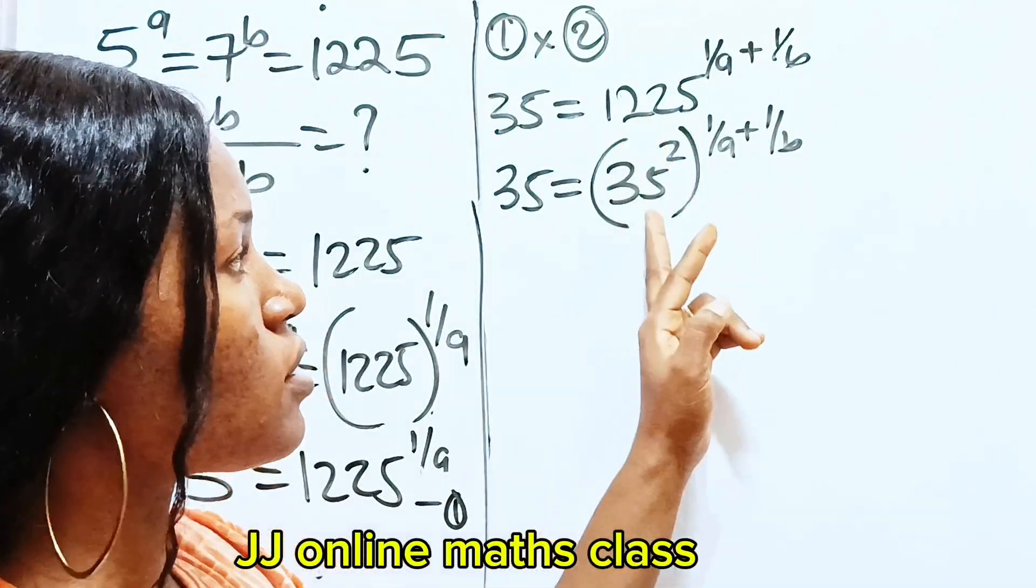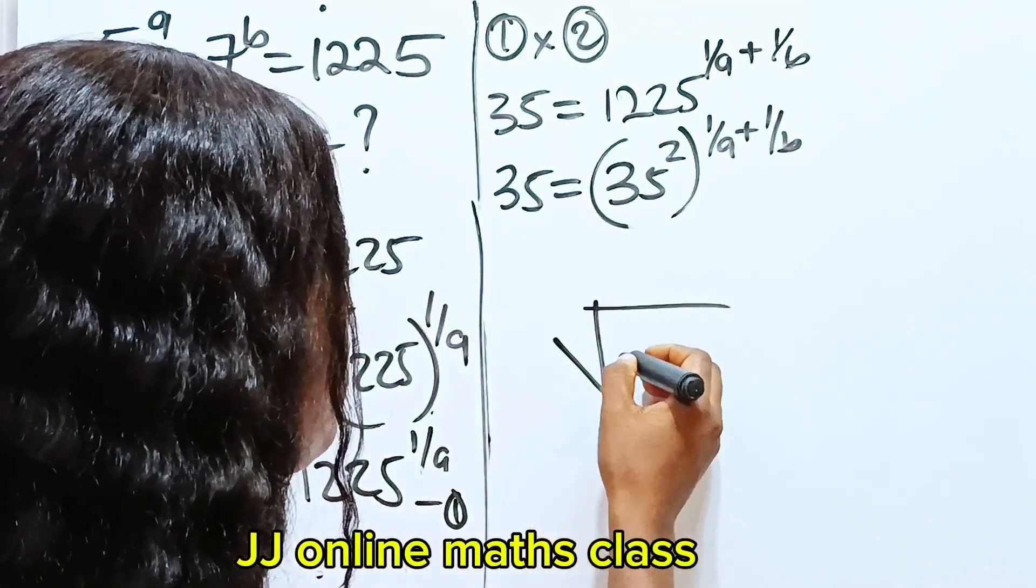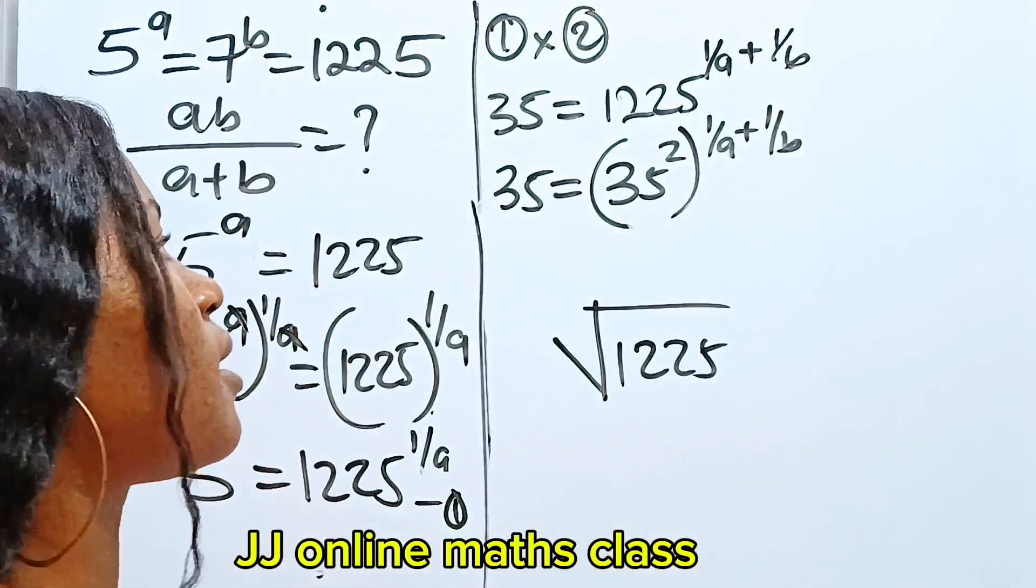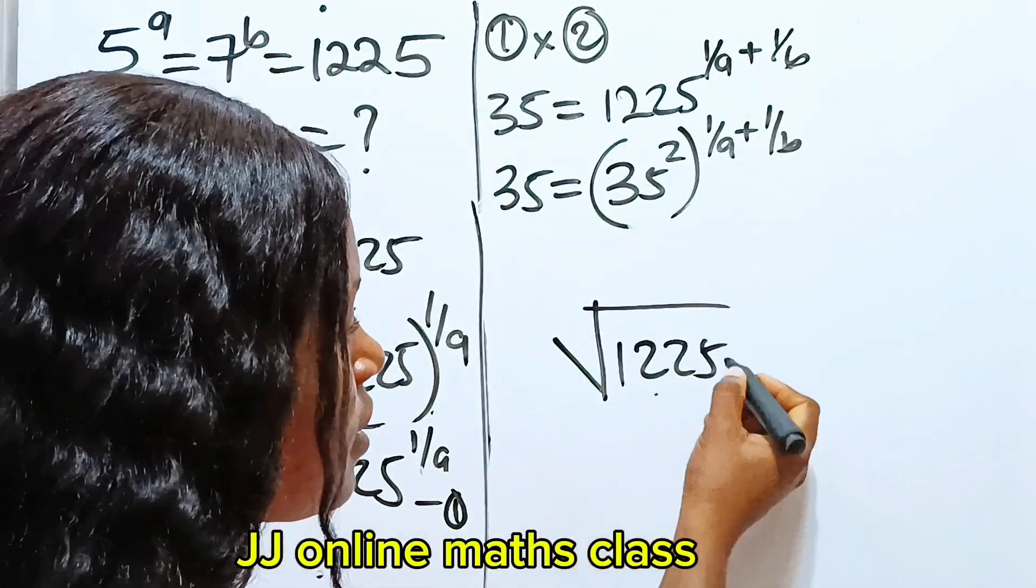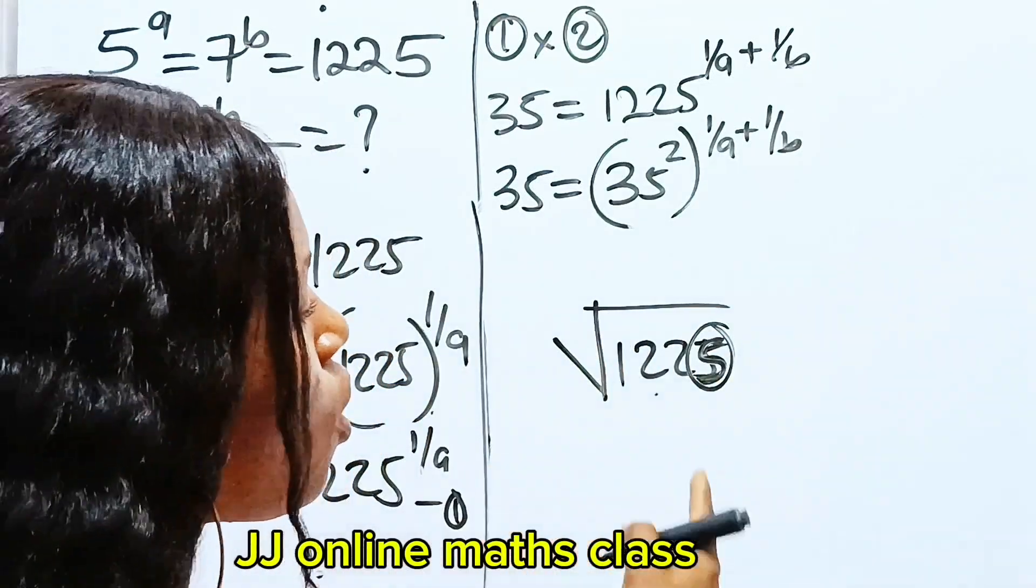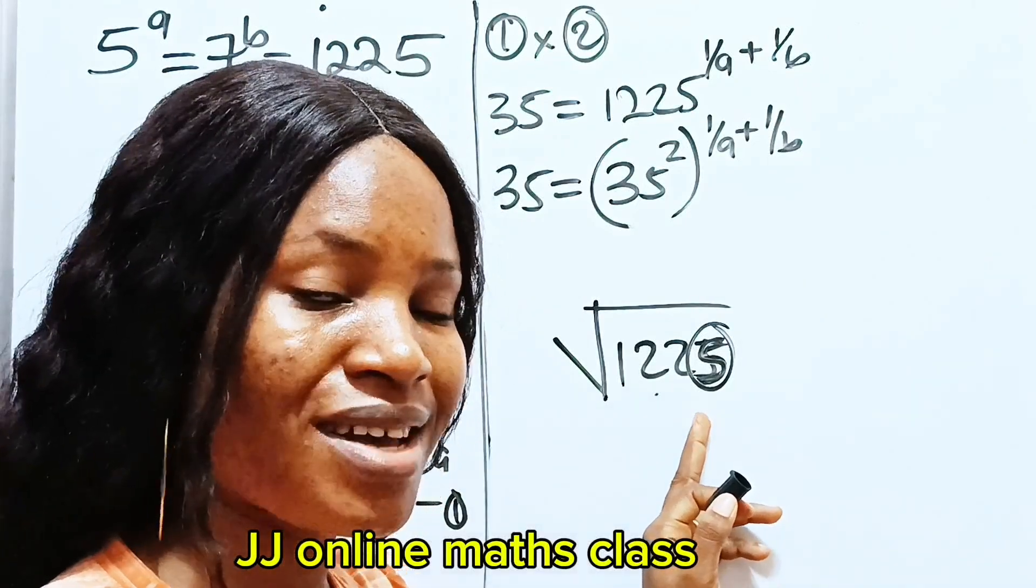Now, I want to give you a trick on how I got this without the calculator. We have square root of what? Square root of 1225 will give us 35, right? Let's check. If you look at this, we have 5 here. This 5 is what we are going to concentrate on. What number squared will give you a number that ends with 5?